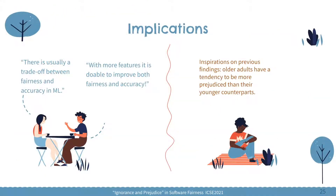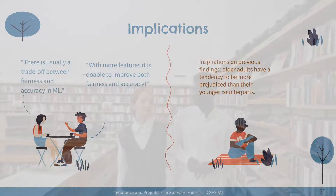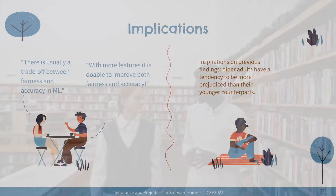The empirical study has a series of implications for developers and researchers. For example, there is usually this belief that there is a trade-off between fairness and accuracy in machine learning. But our results indicate that there is indeed a sweet point where, with more features, it is totally doable to improve both fairness and accuracy. Our results also have some interesting inspirations on previous findings in the psychology domain — for example, scientists found that older adults have a tendency to be more prejudiced than their younger counterparts, an observation without enough explanation.